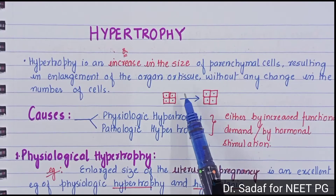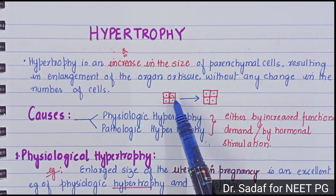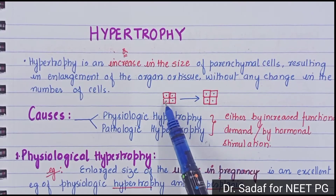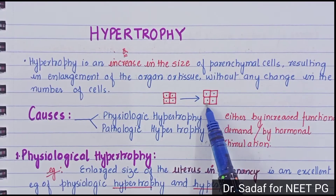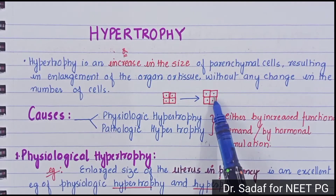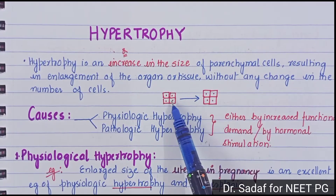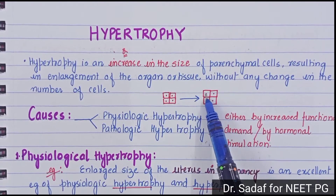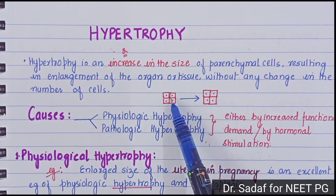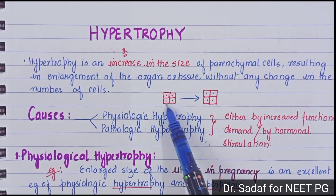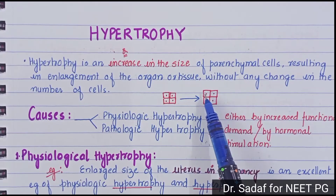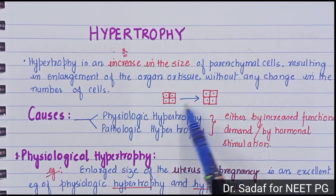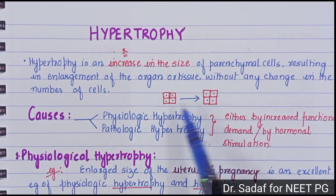In this figure, there are 4 cells that are small, and then undergo hypertrophy. So there are 4 cells — the number of cells does not change, but the size of the cell is increased. When the cells have increased in size, the organ is also enlarged.